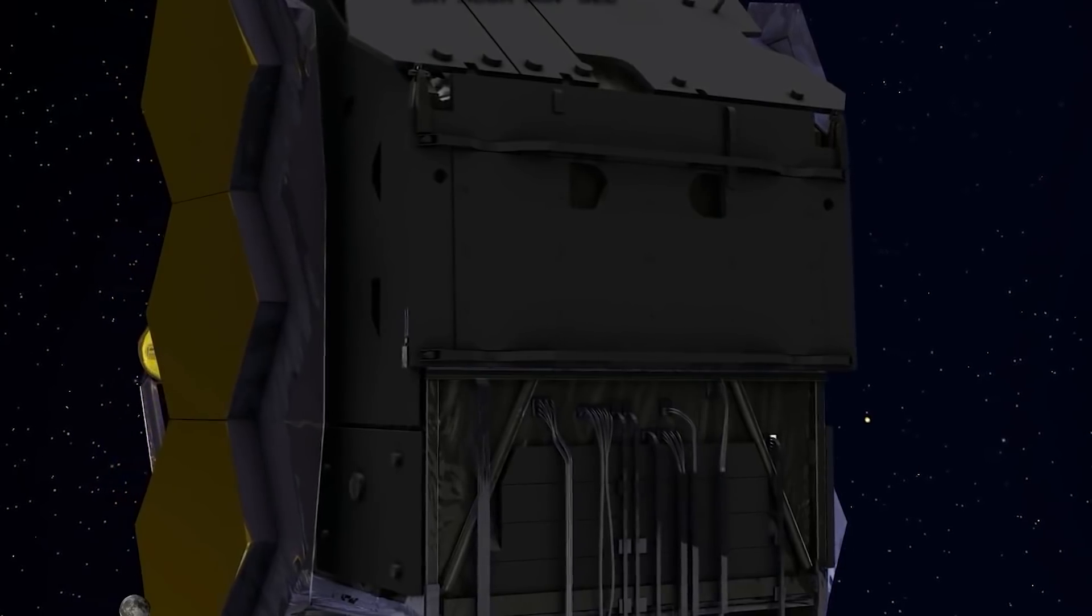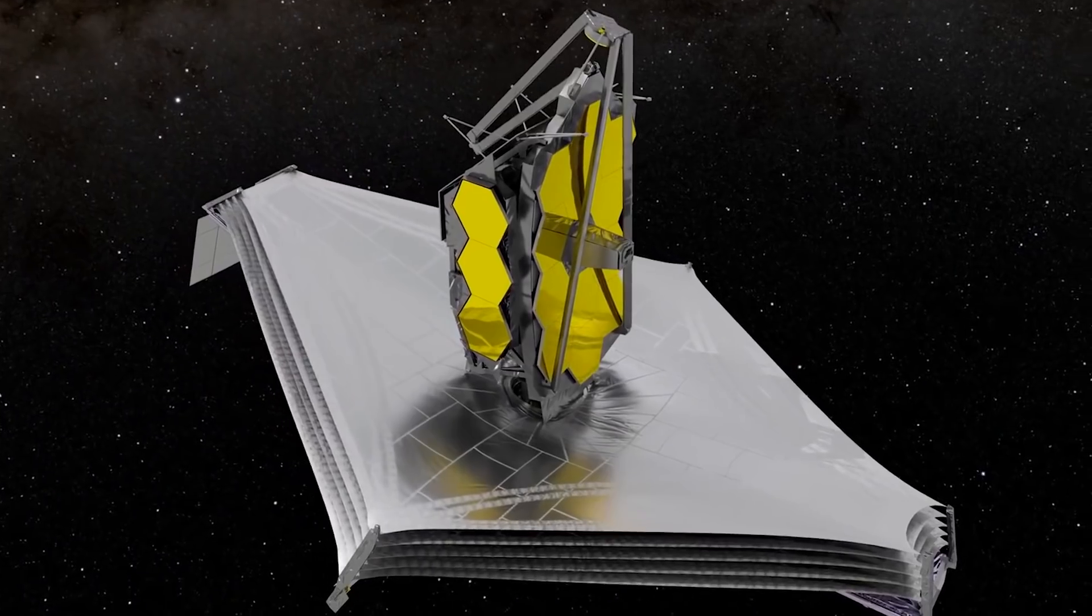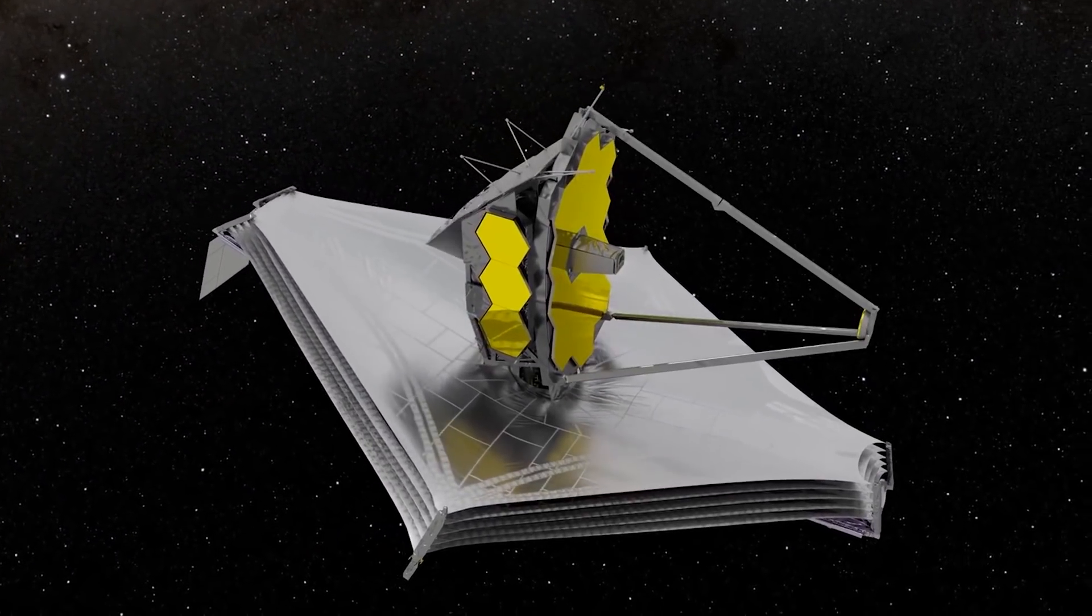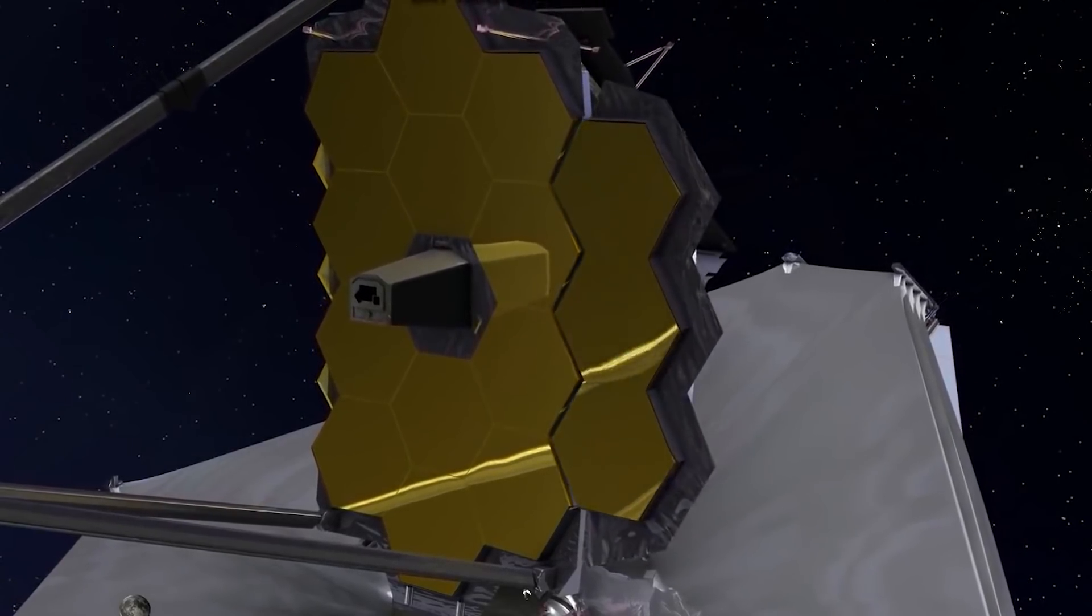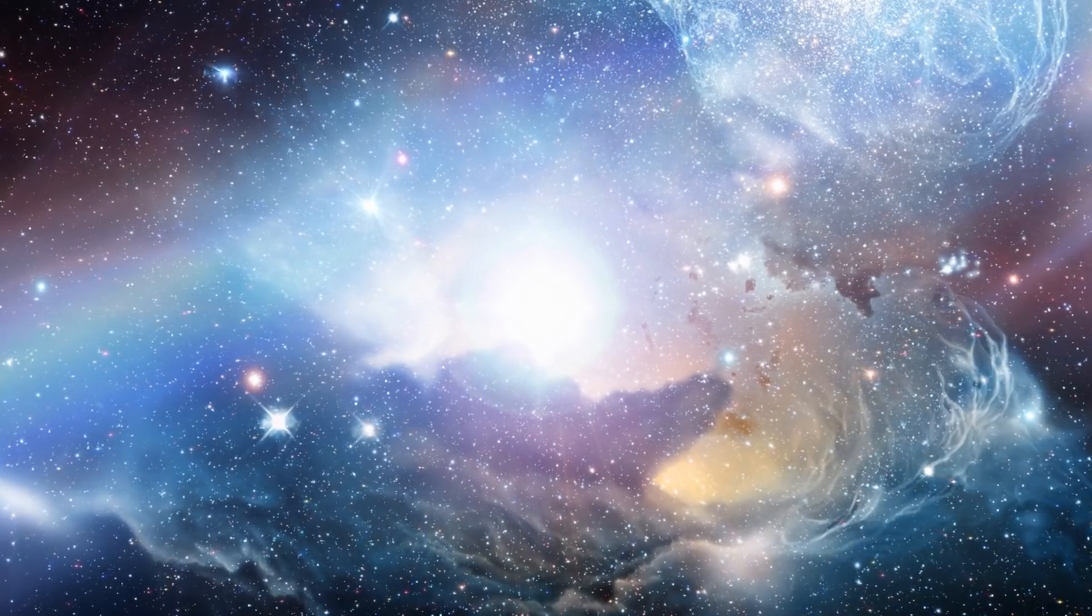The JWST has a huge sun shield that is supposed to keep the telescope cool, since the infrared light is warm, and if the telescope isn't kept cool, it runs the risk of blinding itself to the light of the object it's trying to examine.